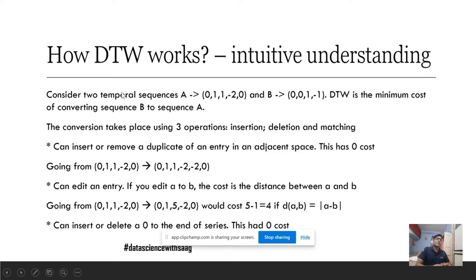It is the algorithm for measuring similarity between two temporal sequences which may vary in speed. Next is what is the intuitive understanding of DTW? We now know the definition of DTW that it is an algorithm measuring two time series. But what is the intuition behind DTW? So DTW in a very generic sense would mean that the minimum cost of converting series A to series B, and this conversion would take place utilizing three primary operations: insertion, deletion, match.